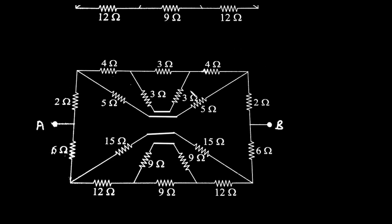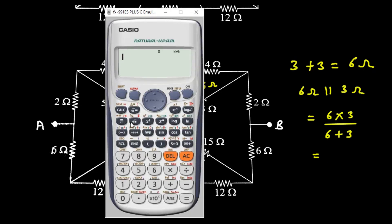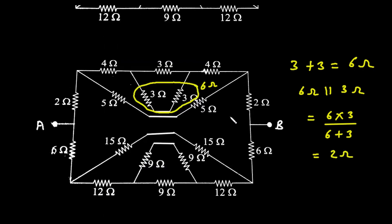Here we can clearly see this 3 ohm and this 3 ohm are connected in series, so their equivalent resistance is simply 6 ohm. So 3 plus 3 equals 6 ohm. And here this 6 ohm in parallel with 3 ohm: 6 into 3 divided by 6 plus 3, which is simply 2 ohm. So now this becomes 2 ohm.